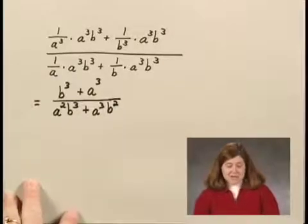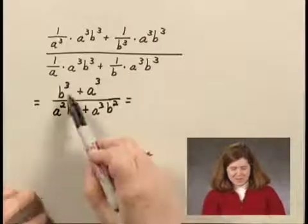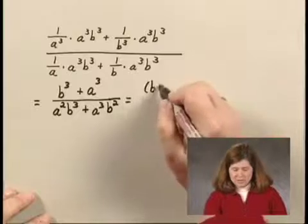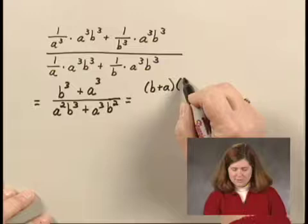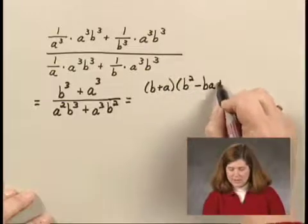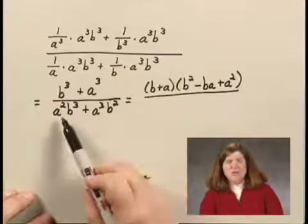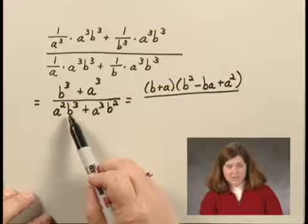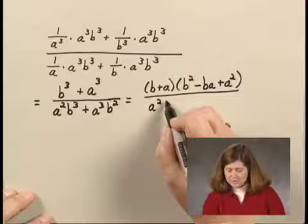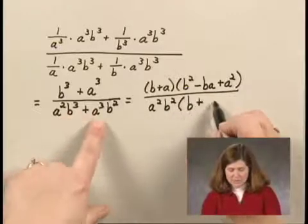Now I need to see if I can factor. In the numerator, I have a sum of cubes which factors to b plus a, times b-squared minus b-a plus a-squared. The denominator has common factors: a-squared b-squared is a common factor to both terms, so I factor out a-squared b-squared, and I'm left with b plus a.